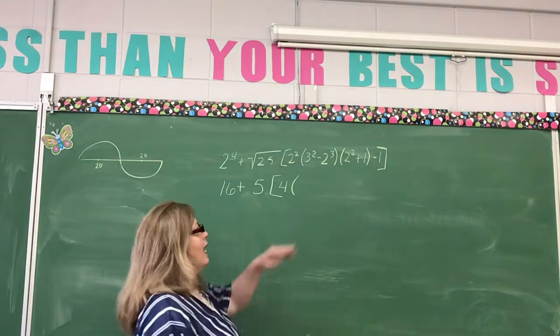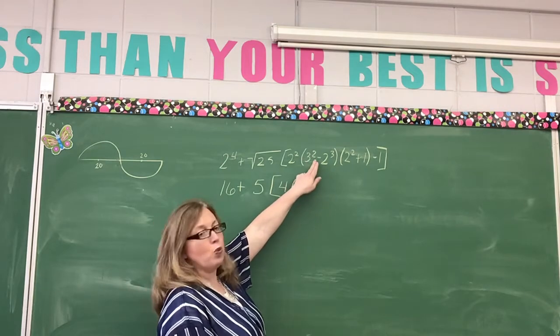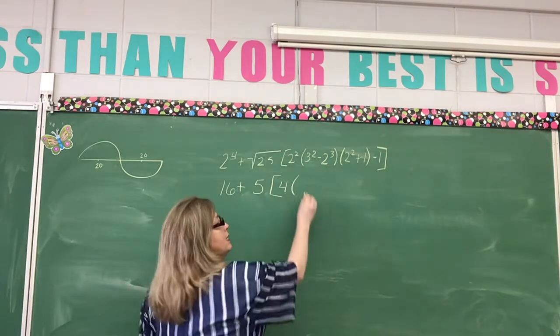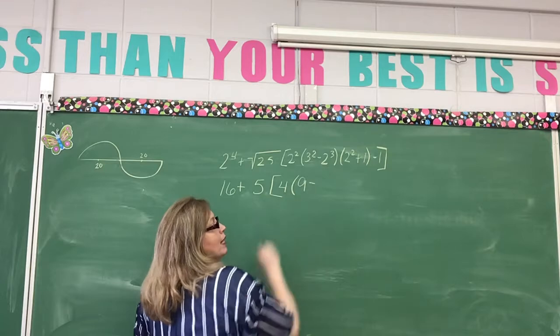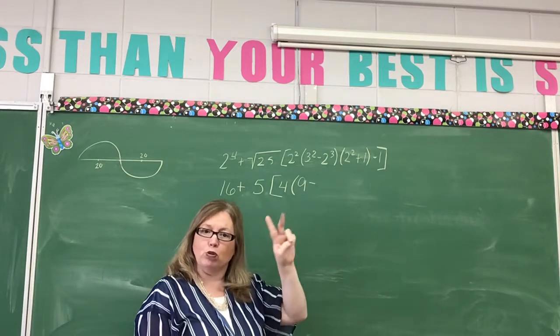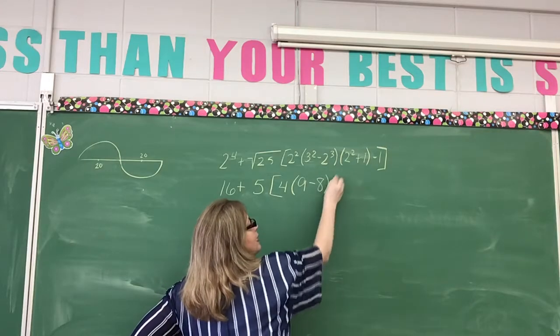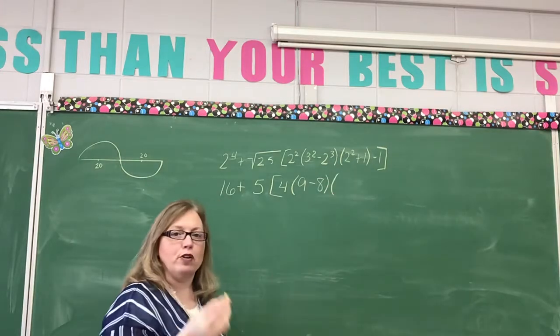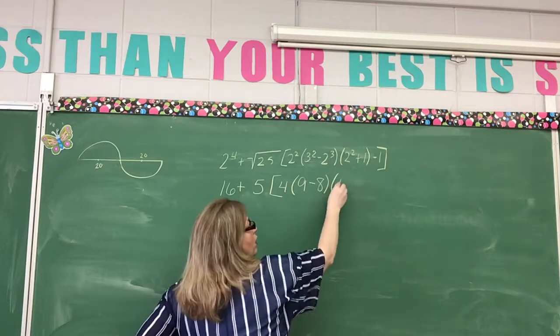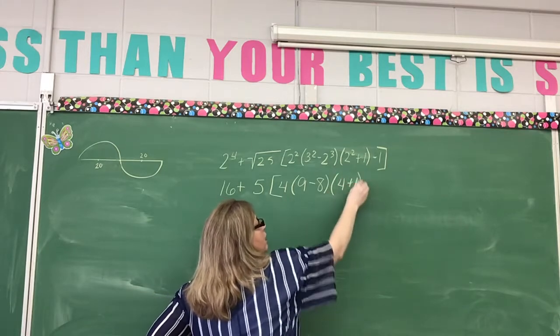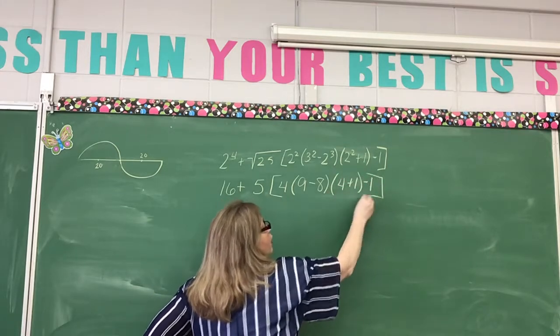Okay. So we have three squared, which means three times three is nine minus two to the third. That means two times two is four times two is eight. Okay. Put our parentheses. Now we have two squared. Two times two is four plus one minus one, and then our bracket.